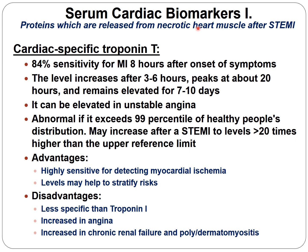The most used cardio-specific protein is Troponin T — it is not an enzyme, it is a protein. It has about 84 percent sensitivity for diagnosing AMI eight hours after the onset of symptoms. The level begins to increase after three to six hours, peaks at about 20 hours, and remains elevated for seven to ten days.